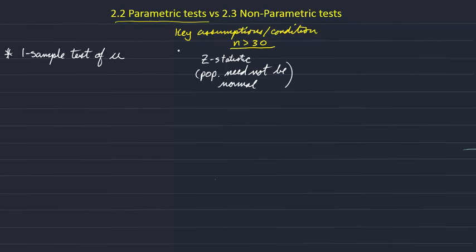So we could use a Z statistic in that situation. Alternatively, we had to assume a normal population distribution if n was small, less than 30. If we had a small sample, we had to assume the population distribution was normal, in which case we used the T statistic.